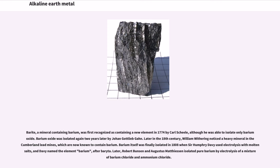Barite, a mineral containing barium, was first recognized as containing a new element in 1774 by Carl Scheele, although he was able to isolate only barium oxide. Barium oxide was isolated again two years later by Johann Gottlieb Gahn. Later in the 18th century, William Withering noticed a heavy mineral in the Cumberland lead mines, which are now known to contain barium. Barium itself was finally isolated in 1808 when Sir Humphrey Davy used electrolysis with molten salts, and Davy named the element barium, after barite.